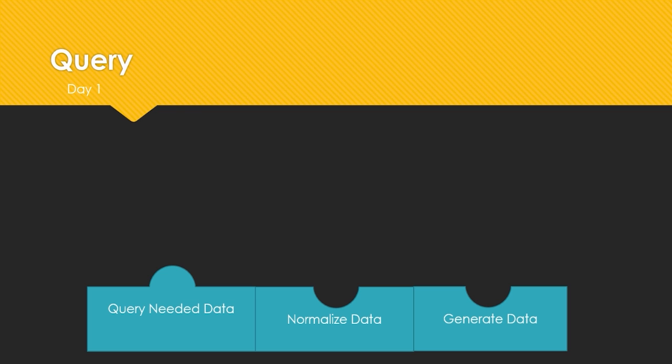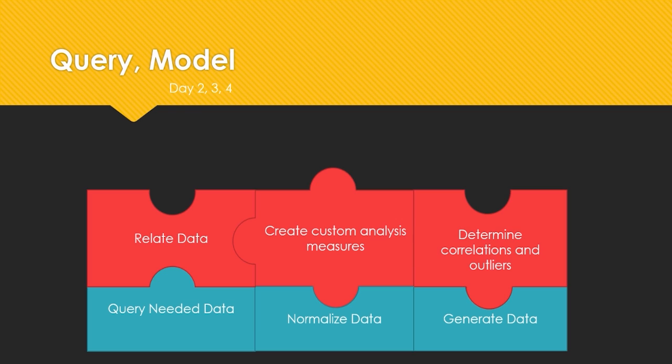Yesterday we got all of our data. Now that we've gotten the data, we want to start building upon that querying. You do need to be able to normalize that data — that's in the center blue block — before it gets into Power Pivot, because unless it's normalized, you're going to have a really hard time actually modeling that data. Once you get it all normalized and ready, you can go ahead and put it into Power Pivot. Power Pivot is where we're going to be able to relate the data, create custom analyses and measures, and really start to determine correlations and outliers between our measures and between our sets of data.